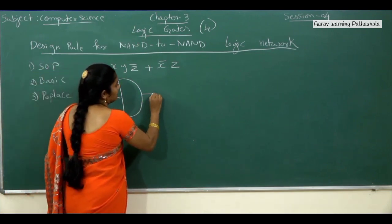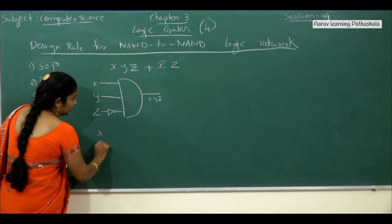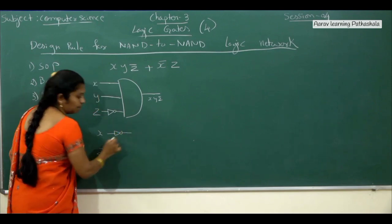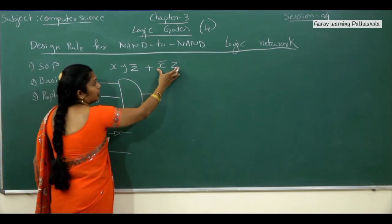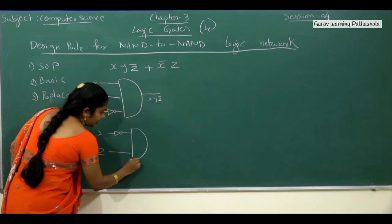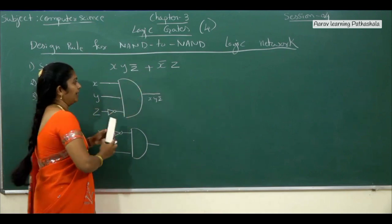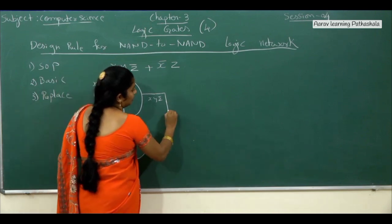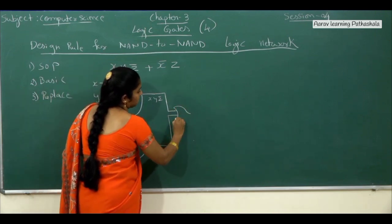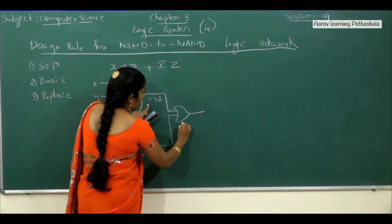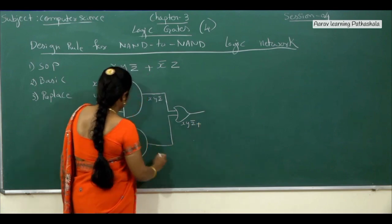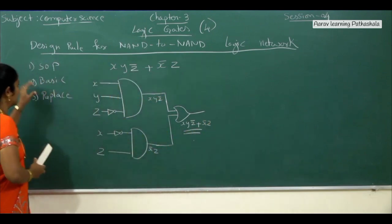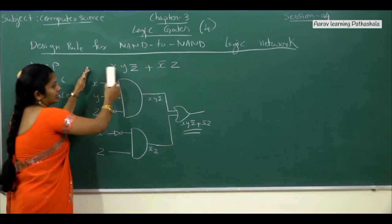For the second part, the variables are X and Z, but we require X̄, so negate X — that gives X̄. Then connect X̄ and Z with the dot operator using an AND gate — the D-shape. These two parts are combined with the plus operator, so use an OR gate — the reverse C-shape. The output is X Y Z̄ plus X̄ Z. The second step — writing the circuit diagram using basic gates — is complete.